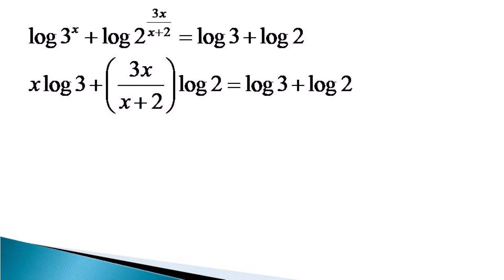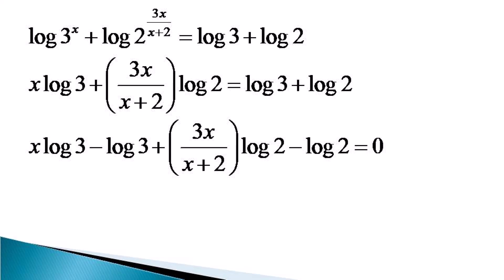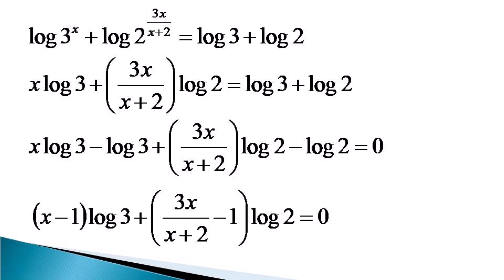Now we bring log 3 and log 2 from the right hand side to the left hand side to get an equivalent equation. We separate the terms with log 3 together and log 2 together, then take log 3 and log 2 common to get: x minus 1 times log 3 plus 3x over x plus 2 minus 1 times log 2, equal to 0.